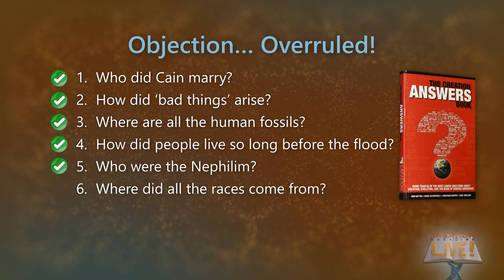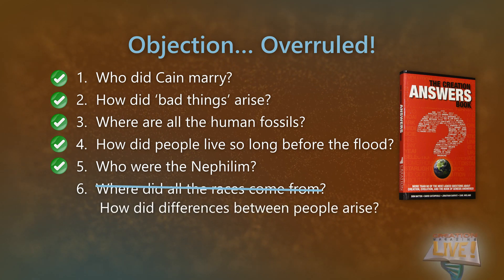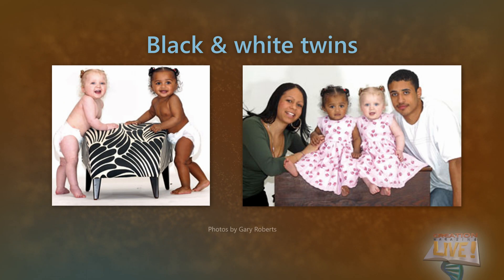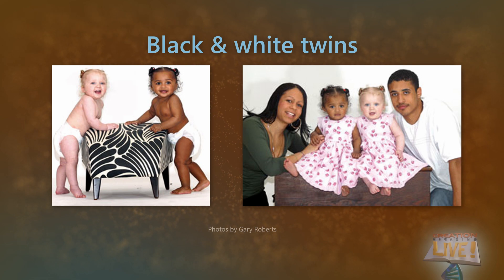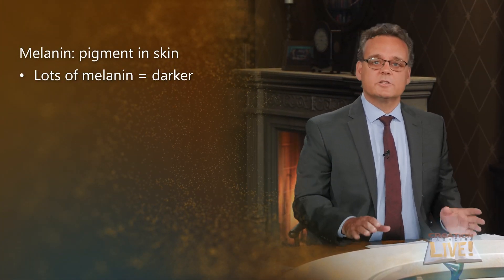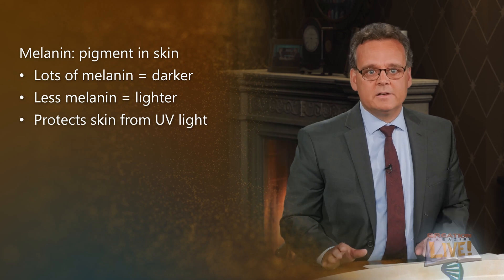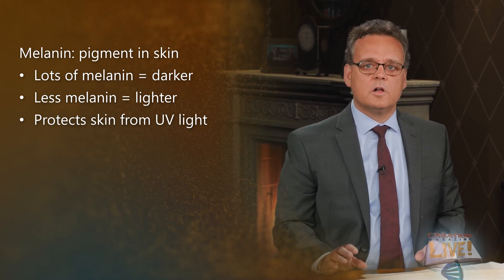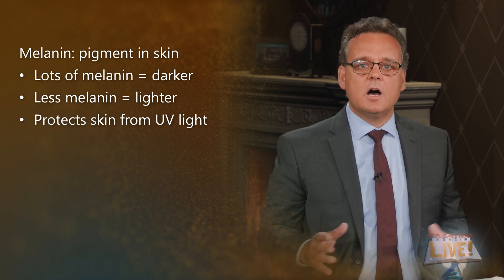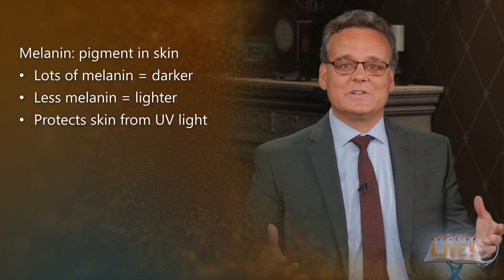Since we're all one race, let's redefine the question: how did differences like skin colour between people arise? We've often shown this example of twins born in 2005. Mom and dad have mid-brown skin, but look at the girls — how is that possible? Well, it has to do with a pigment called melanin. Lots of melanin means darker skin; less melanin, lighter skin. And how much you produce is coded in your DNA. Melanin protects our skin from harmful ultraviolet light from the sun, so it's good to have a lot where there's lots of sunlight. That's why some of us need the SPF 500 sunscreen while others don't.